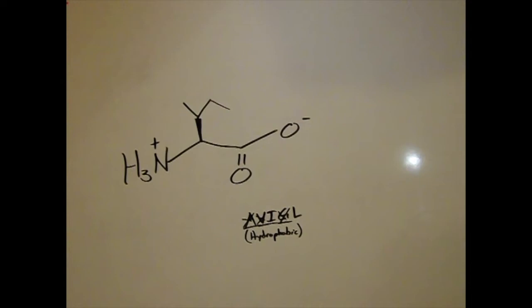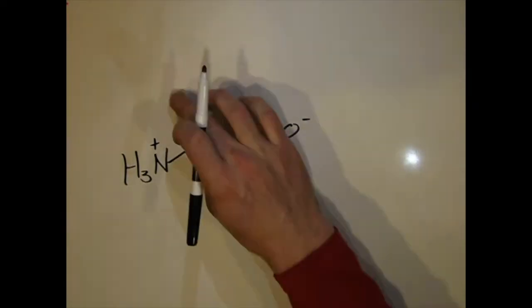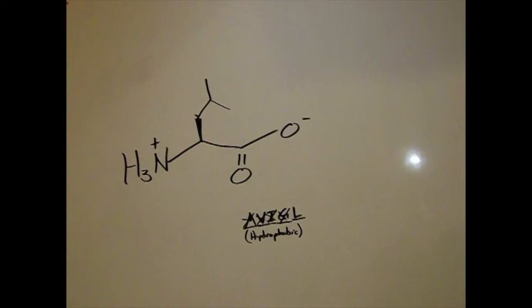Fourth comes the isoleucine. The isoleucine has an isolated methyl group on the left side. The leucine, the final one, has an L in it as you'll see now.